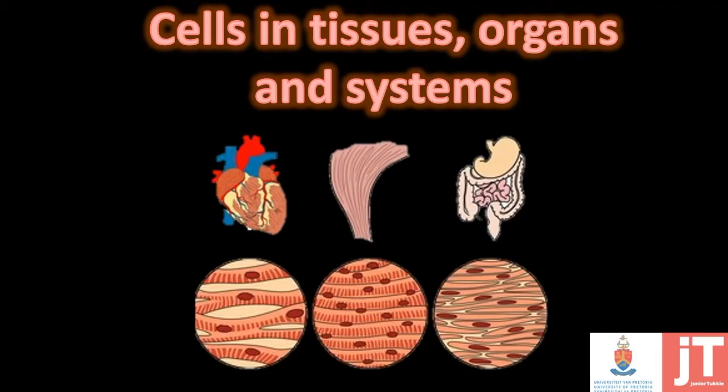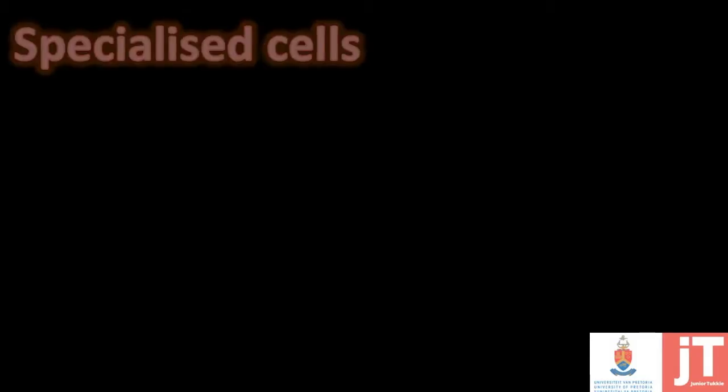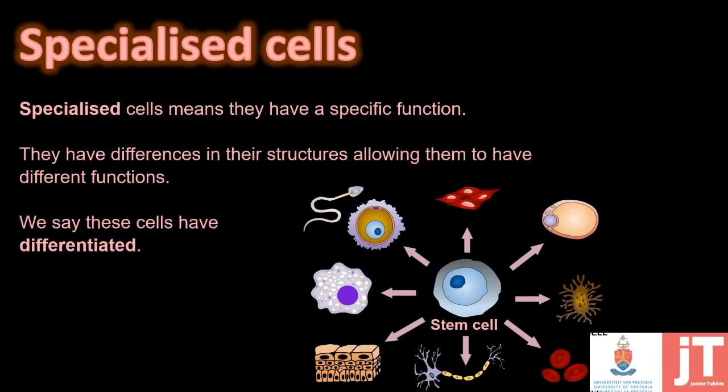In the human body, we will find something called specialized cells. When something is specialized, it's very specific. When a cell is specialized, it means that they already have a specific function. They have different structures, which allows them to perform these different functions. We then say that these cells have differentiated — they have changed themselves to perform a specific function.